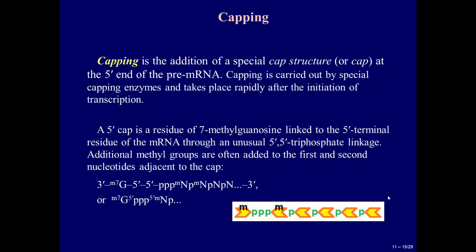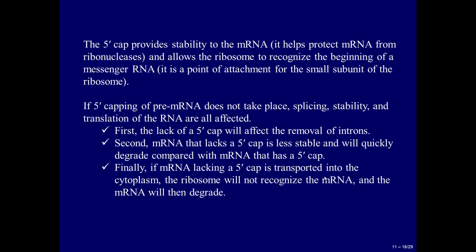Additional methyl groups are often added to the first and second nucleotides adjacent to the cap. In the picture, each nucleotide is indicated by a large arrow. To the left is the 5' end of the nucleotide; to the right the 3' end. A hydroxyl group is added to the 3' end of the nucleotide. Note that the cap structure has an opposite orientation. Three phosphate groups are located between the cap structure and the first nucleotide of the mRNA. Both the guanosine of the cap structure and the first nucleotide of the mRNA are methylated. The 5' cap provides stability to the mRNA, helps protect it from ribonucleases, and allows the ribosome to recognize the beginning of a messenger RNA as a point of attachment for the small ribosomal subunit.